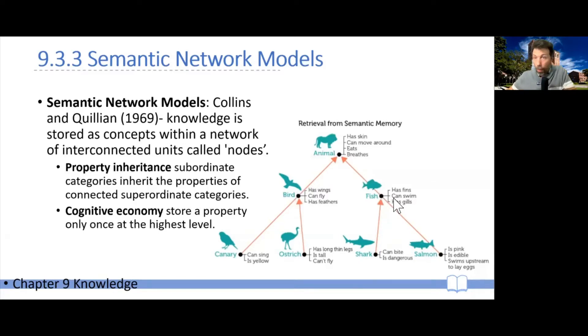And of course, this setup also gives rise to obvious predictions. The closer you are to a node, the faster it should be to verify that, for example, a canary has a certain property. Or it's faster to verify that a canary is a bird compared to a canary is an animal. Because to verify whether a canary is a bird, you just have to go from here to here. To verify whether a canary is an animal, you have to cross this whole hierarchy until you get up here and verify that it's an animal.